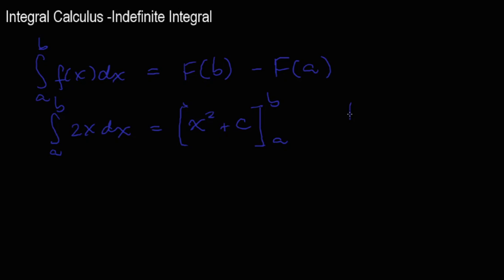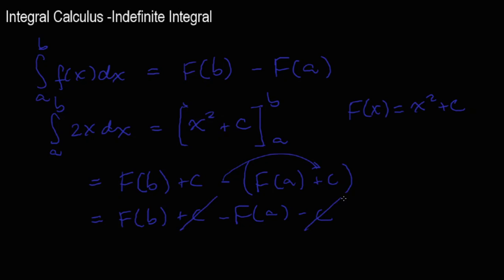What would be f of a? This means f of x is x squared plus a constant. If I put b and a here, wouldn't I have f of b plus c, it's a constant, minus f of a plus c. If we expand, we get f of b plus c minus f of a minus c, because when we expand, that sign is going to change.